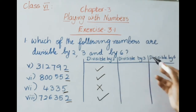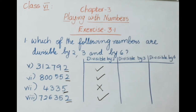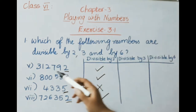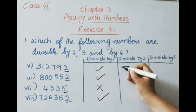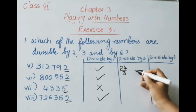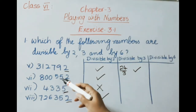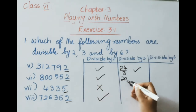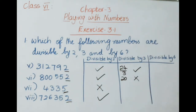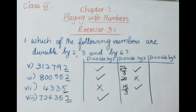Now checking divisibility by 3: add all the digits and check if the sum is a multiple of 3. For 3,12,792: 3+1+2+7+9+2 = 24, divisible by 3. For 8,552: 8+5+5+2 = 20, not a multiple of 3, so not divisible by 3. For 4,335: 4+3+3+5 = 15, a multiple of 3, so divisible by 3.